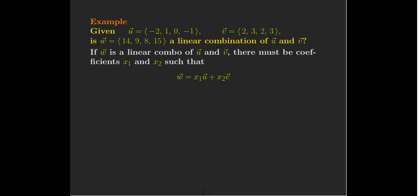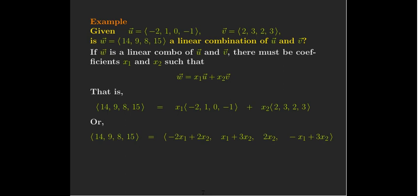Well, if w is a linear combination of u and v, then I have to be able to find some scalars, x1 and x2, where w is x1 times u plus x2 times v. So let's go ahead and substitute the components for w, u, and v. And from that, I can write the right-hand side as a single vector.